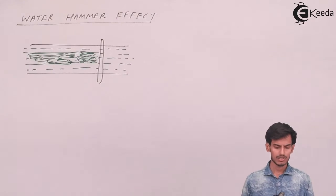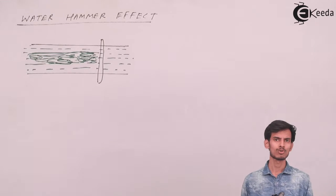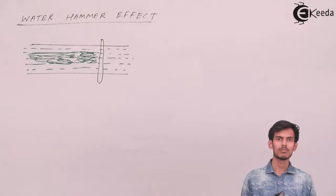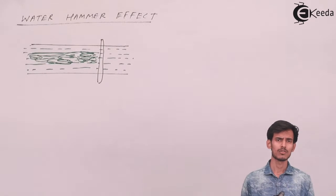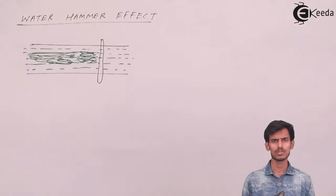So I'll explain the water hammer effect. Here what happens is suppose the fluid is flowing through a pipe, it's flowing normally with some velocity. Now what you do is you obstruct the flow, you close the valve and suddenly close the valve and the fluid velocity becomes zero.